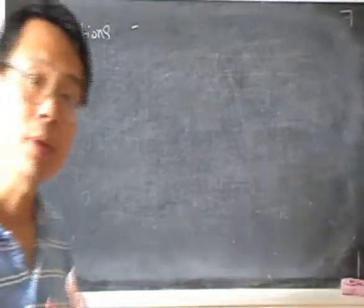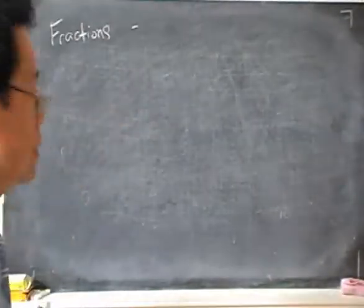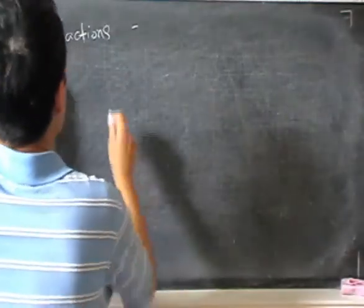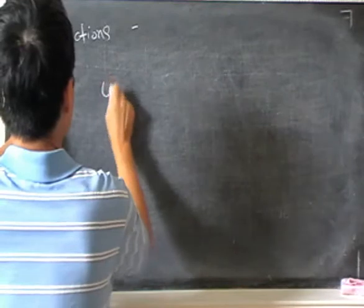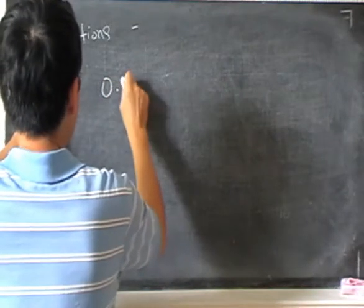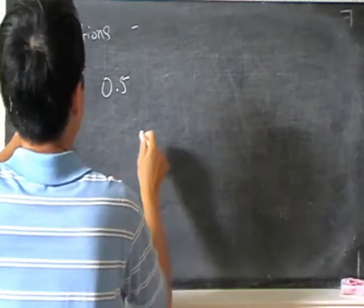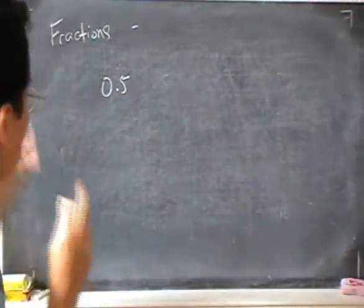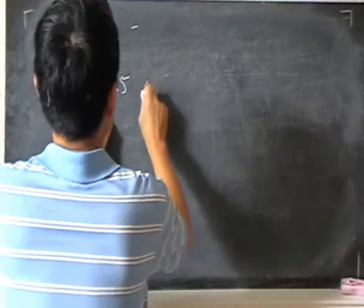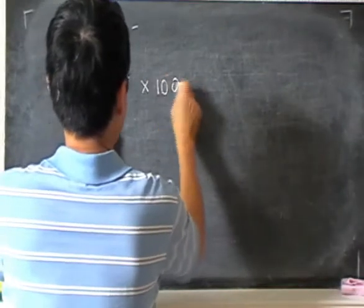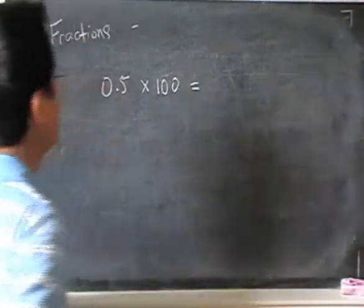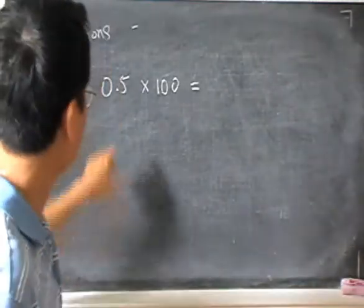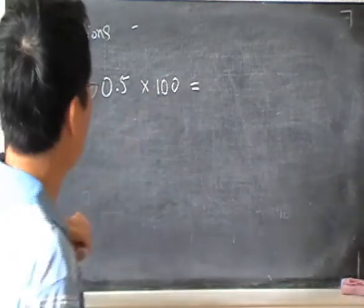And just one last thing to mention about percentages. So for example, if I have 0.5, if I want to convert this to a percentage, the way to do it is to multiply by 100. So that's always the way to change the percentage.